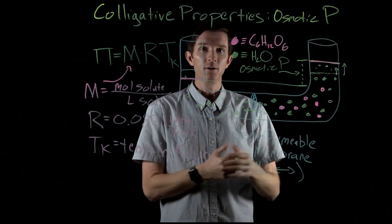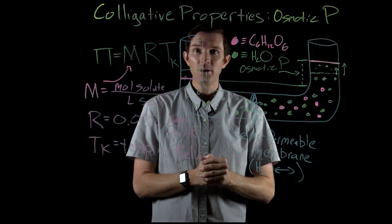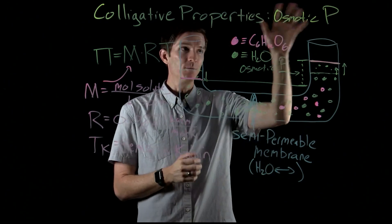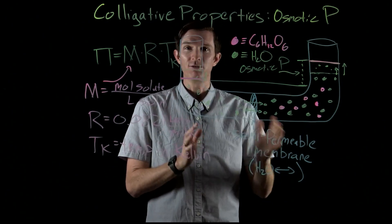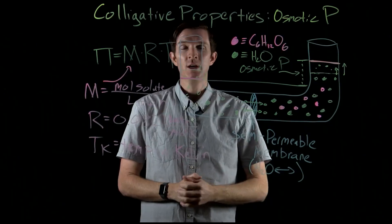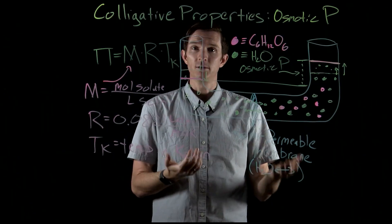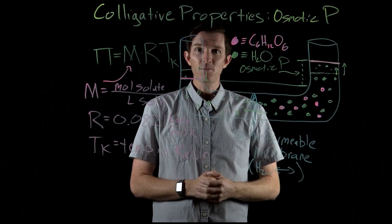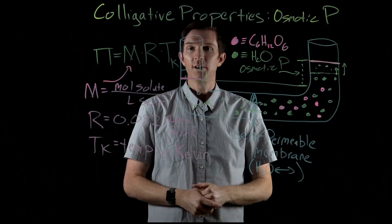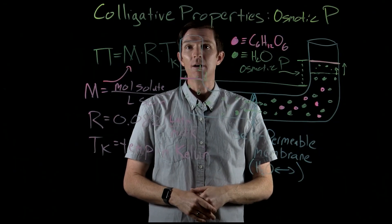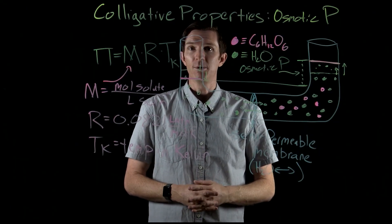We're going to follow this video up by looking at an example calculating osmotic pressure for a solution, calculating boiling point change, freezing point change, and vapor pressure change for a solution where we dissolve some glucose and see how it affects those different colligative properties.